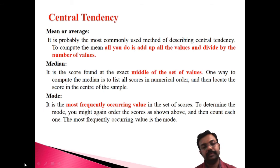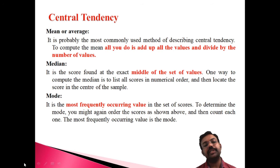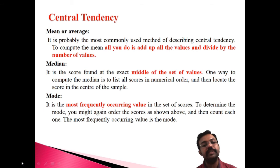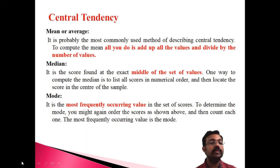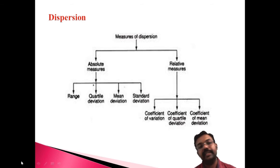The third measure is the mode. The mode is the most frequently repeated item in a series. For discrete data, the most repeated number is the mode. For continuous frequency distribution, the class with the highest frequency gives the mode. Mean, median, and mode are the three important measures of central tendency.